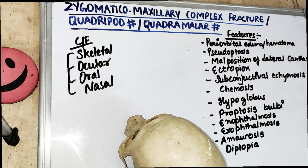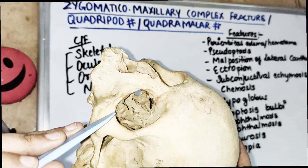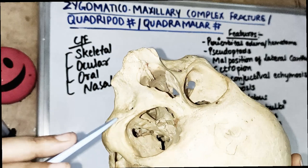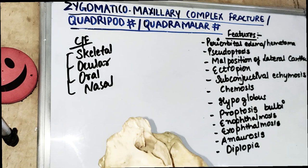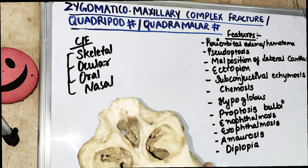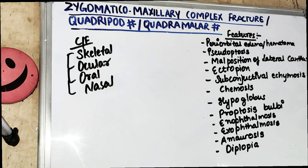Talking about the zygomatic or complex fracture — the zygomatic bone is not an independent bone, it is associated with many bones: the maxilla, the frontal bone, the temporal bone, and also the orbital bone. So the fracture of the zygoma is not alone; it is associated with other fractures also. The Rose and Killis classification has been covered in the previous video with demonstration, and today's video we are going to talk about the features.